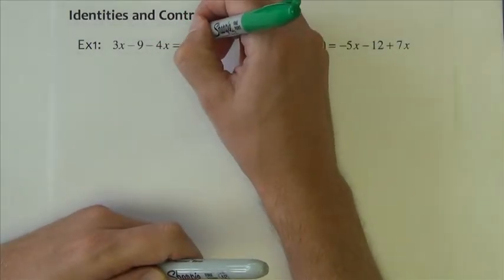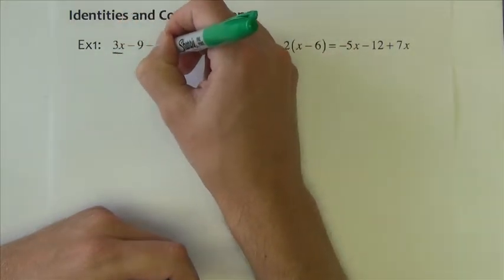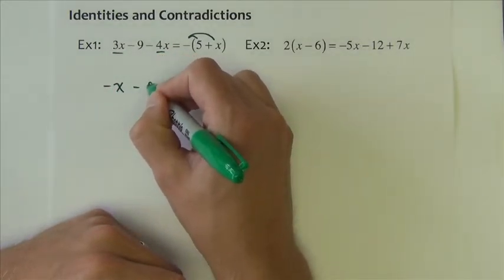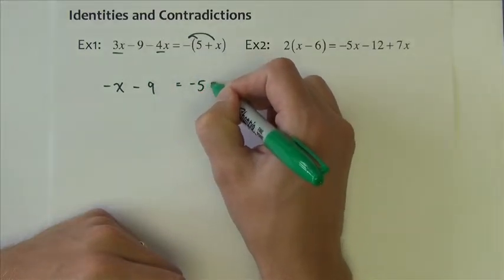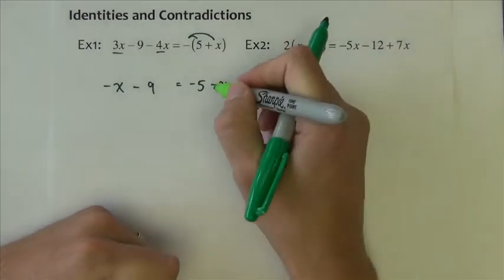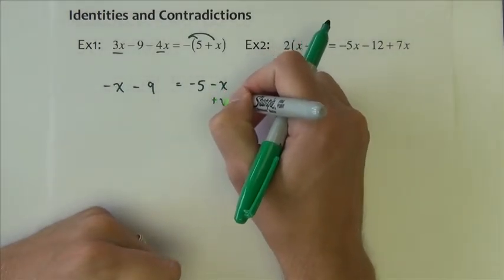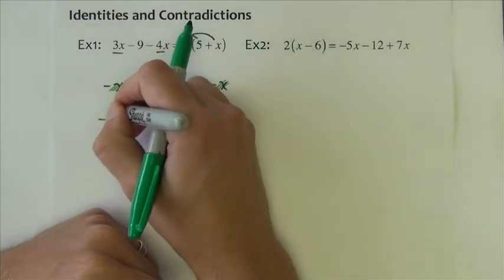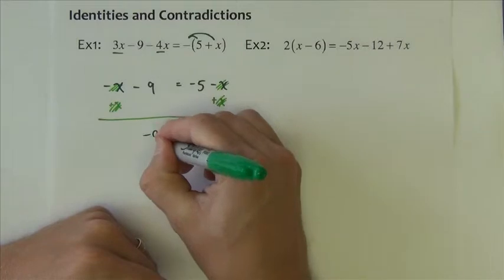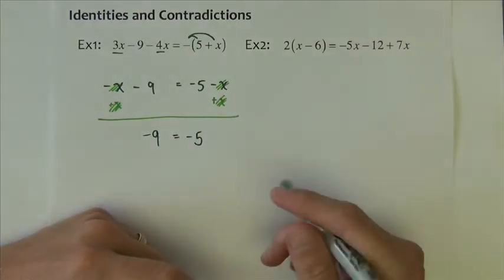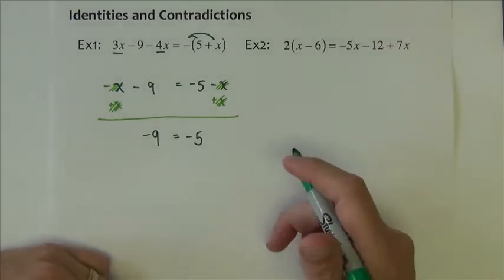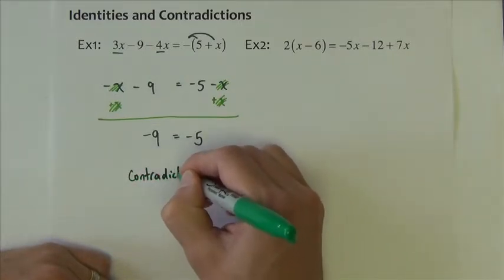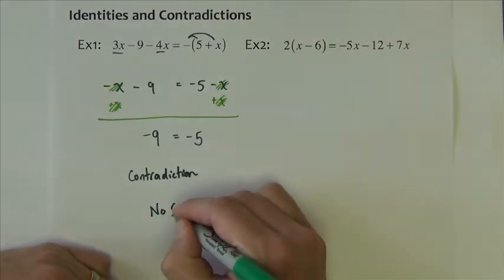I'm going to begin this problem by distributing the negative sign and also combining my like terms on this side. So we'd end up with negative x minus 9 equals negative 5 minus x. I am going to add the x to both sides. Notice that it cancels on both sides of the problem. So I have negative 9 equals negative 5. There's no x to solve for, and obviously negative 9 does not equal negative 5. So this is an example of a contradiction. And when that happens, the implication is that this problem has no solution.